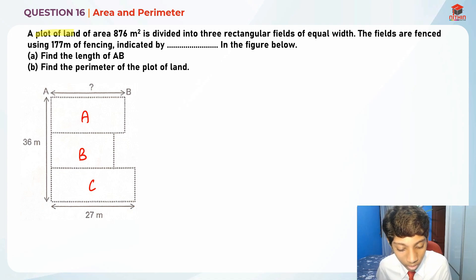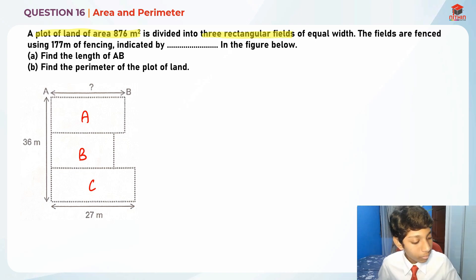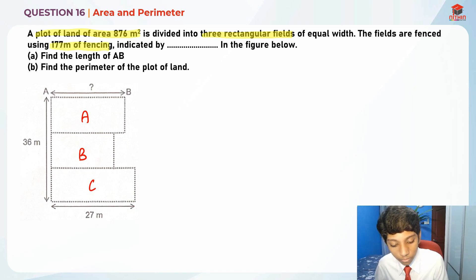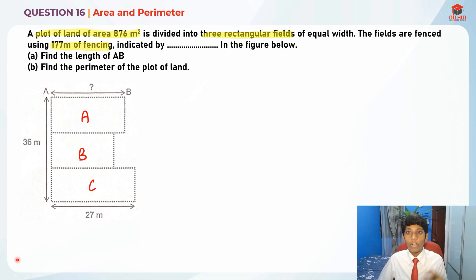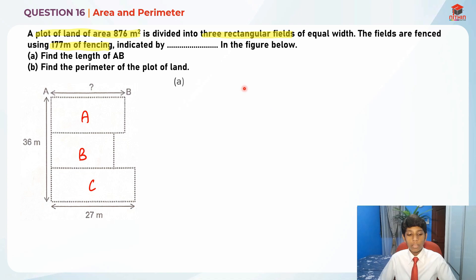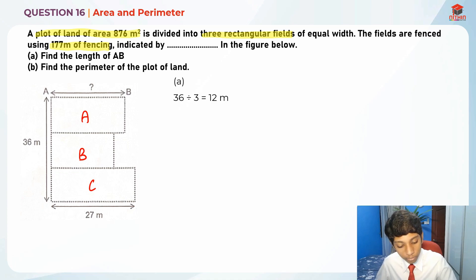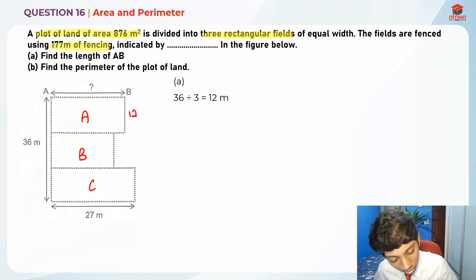So the plot of land of area 876 is divided into three rectangular fields with equal width, and the fields are fenced with 177 meters of fencing. They're asking us to find the length of AB. First, I'm going to take 36 divided by 3, which gives us 12 meters — since it's equal width, we can find each width easily.